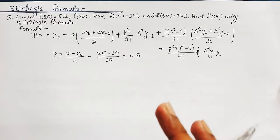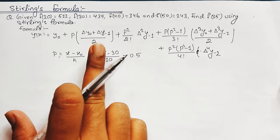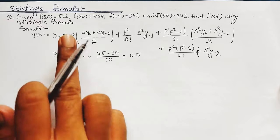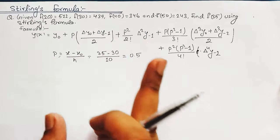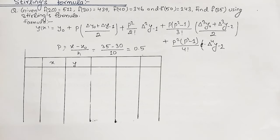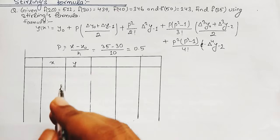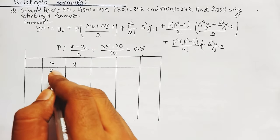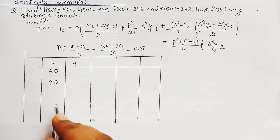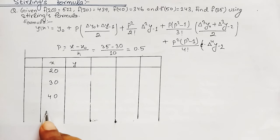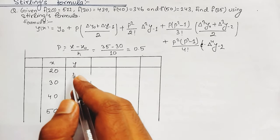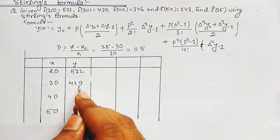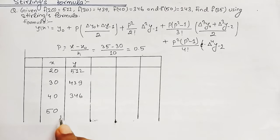We need to draw a difference table to calculate the unknown values in the formula, then substitute those values to find the final answer. We write the x values: 20, 30, 40, 50, and the corresponding y values: 512, 439, 346, 243. We took x₀ = 30, so we label the rows as p = −1, 0, 1, 2 accordingly.